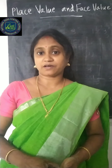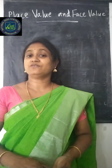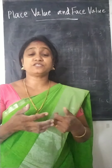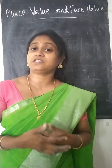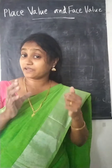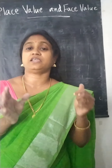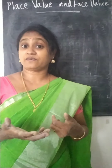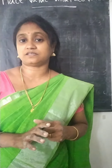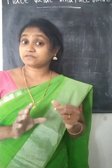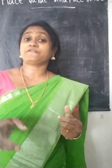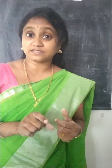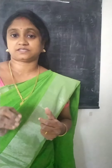We are going to learn about place values and face values. Place value is the position of a digit in a given numeral. And face value is the value of the digit itself.